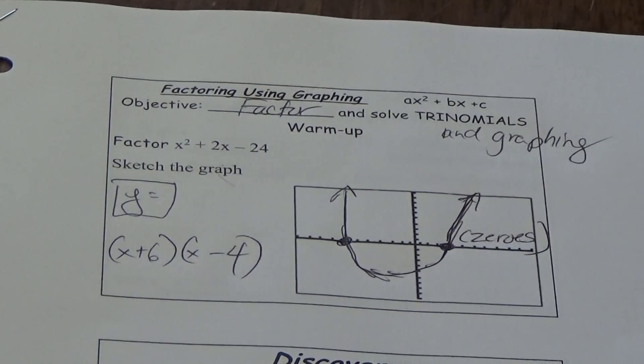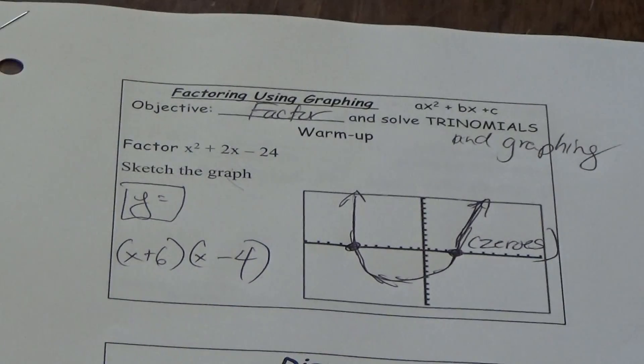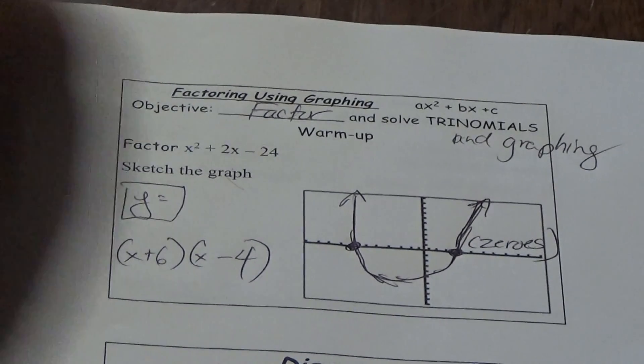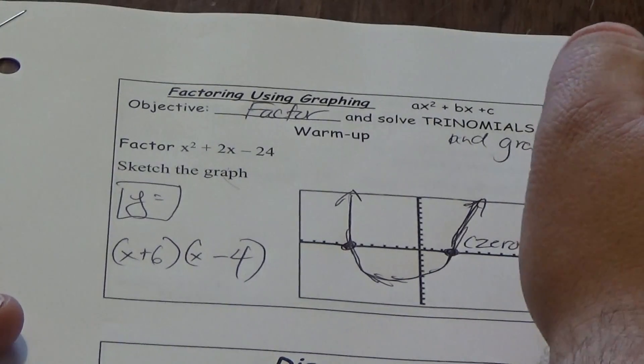So we're going to get into how we take this and end up with this picture, and also how we get the answer to the actual solution. Another word for zeros is solutions or roots, and we've talked about that before.